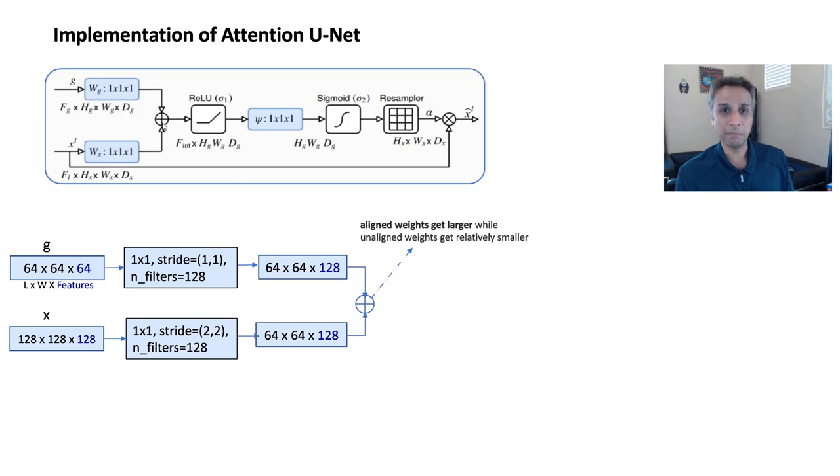So the aligned weights, when we add them, if you have 0.9 and 0.9, you have like a much higher weight. So 1.8 now. So aligned weights get larger, while the unaligned weights get relatively smaller. So if it's like 0.1 and 0.1, they get like 0.2, much smaller. So that's what addition really helps with.